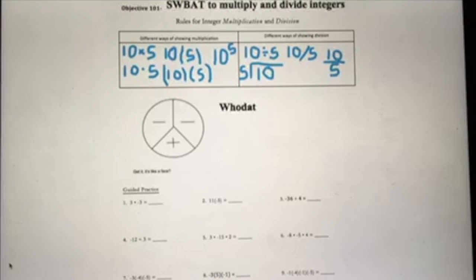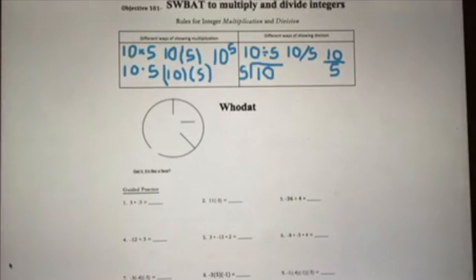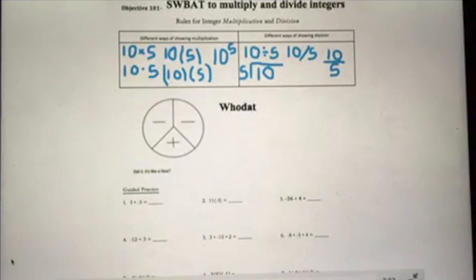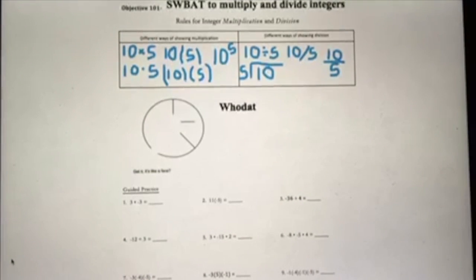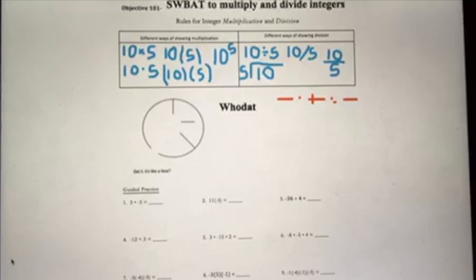The cool thing about Houdat is he's actually very useful in helping us multiply and divide integers. For example, if you were trying to multiply a negative and a positive, you could use Houdat and just cover up one negative and one positive. Notice what's left over — a negative. That's because a negative times a positive equals a negative. And the same thing is true for division — Houdat works for multiplying and dividing positive and negative numbers.